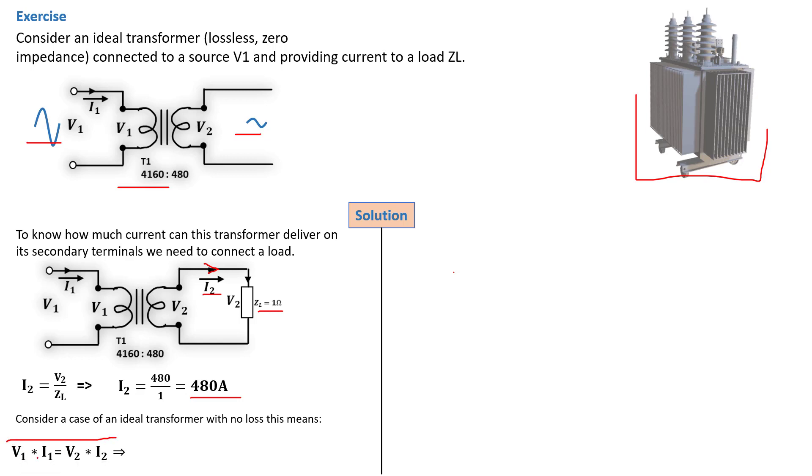Our V1 times I1 equals V2 times I2. That means VA in equals VA out. From this we can deduce the formula by calculating I1. So I1 equals V2 divided by V1 times I2. We can determine I1 because we have all these parameters: V2, V1 and I2 are all available. I1 equals 480 divided by 4160 times 480, which gives us 55.4 amps.